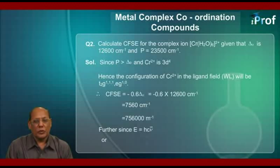Therefore CFSE will be equal to -0.6 times Δₒ, that is equal to -0.6 into 12,600 cm⁻¹. So that amounts to 7560 cm⁻¹, which we can write as 756,000 m⁻¹.